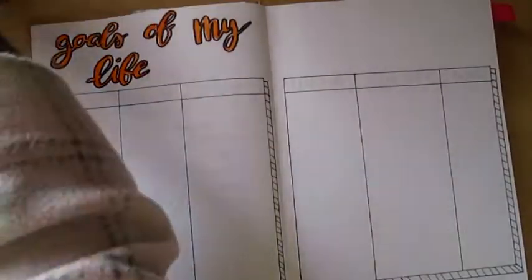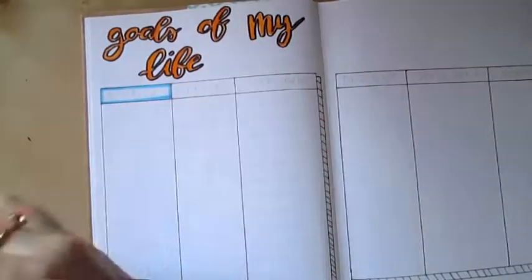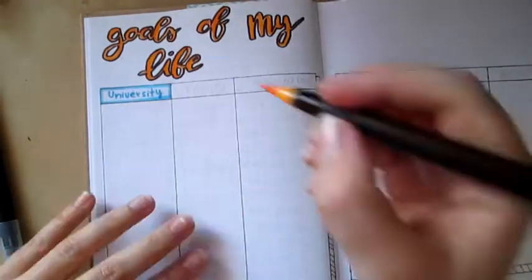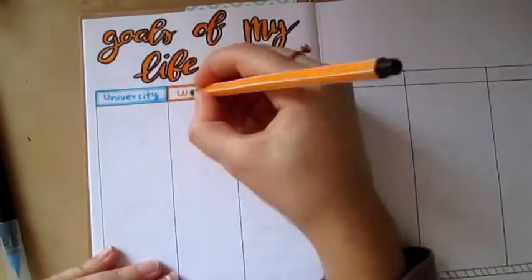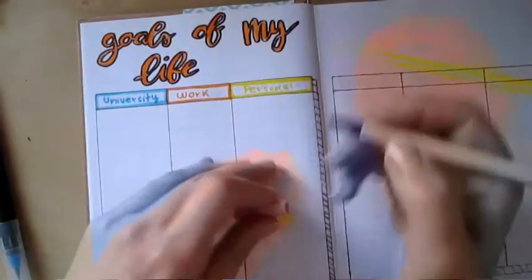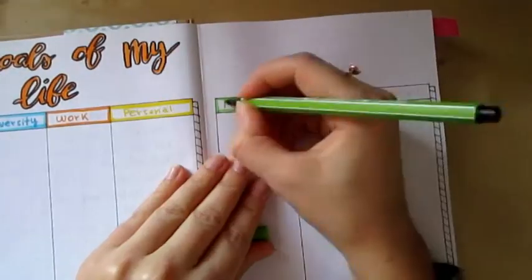In each column, I write the goals that I want to achieve to improve myself in those categories. And here I'm using again the brush pen to match every category to a different color.